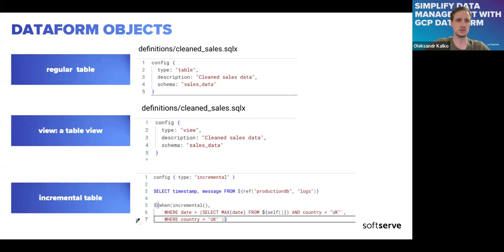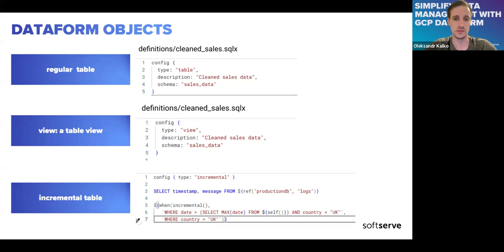Let's talk about the main Dataform object types. We have a regular table — it will be refreshed and overwritten on every run, depending on your scheduler. A view will create a view definition each time the model runs without touching any data.